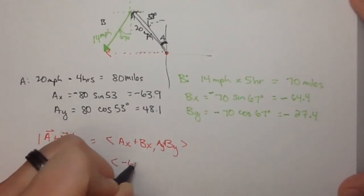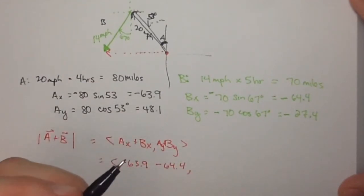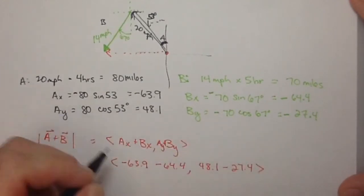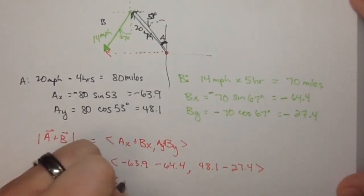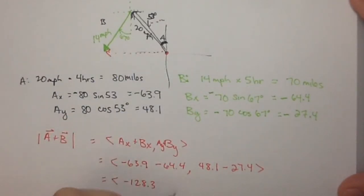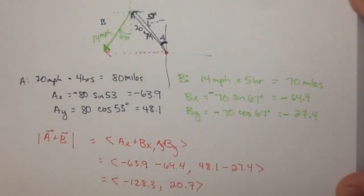So this is -63.9 minus 64.4, and 48.1 minus 27.4. So we're finding the vector -128.3, 20.7. And that makes sense because they're both moving left, so this should be bigger than either of them. And this should be positive because this guy is going north a little faster than this guy is going south.